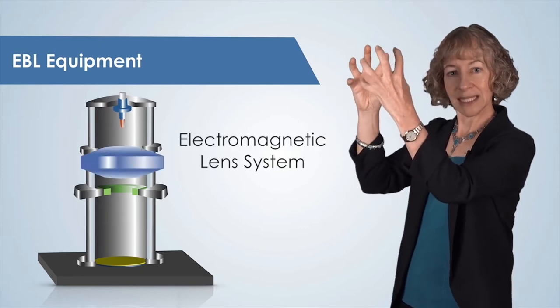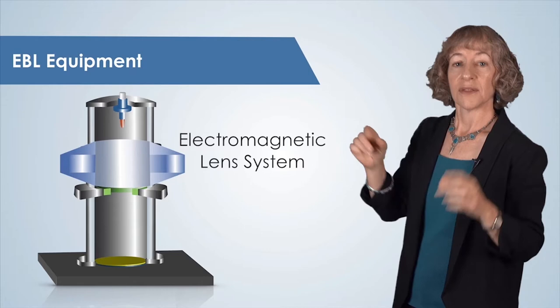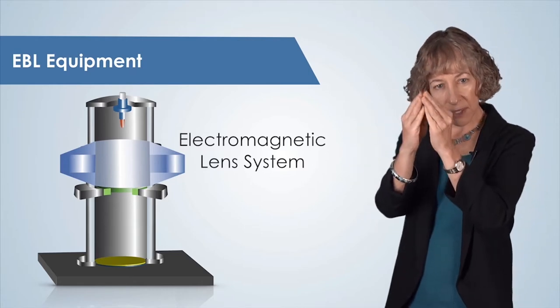Next, is an electromagnetic lens system. Here we show a cross-sectional view. The lens system focuses the beam of electrons.